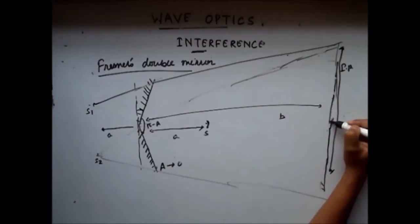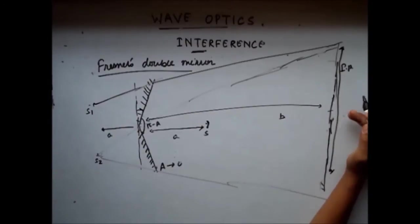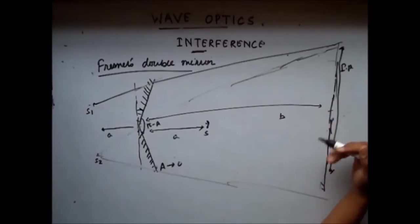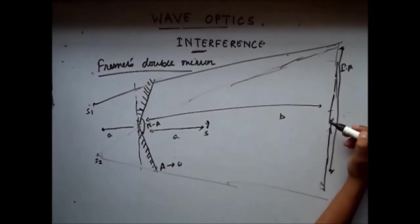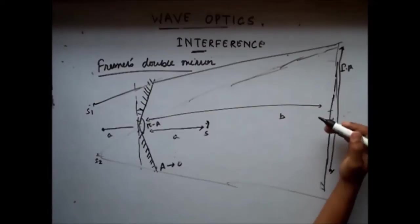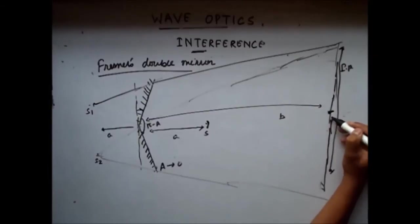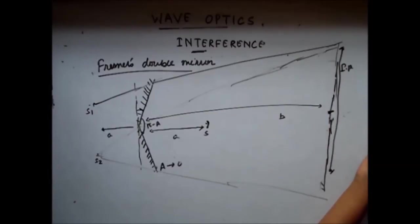So here we will have a central maxima, then a dark band, then a light band, then again a dark band. On the negative side again we will have a maxima, then dark band, then maxima, then dark band, and so on.